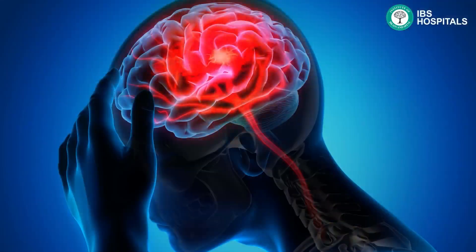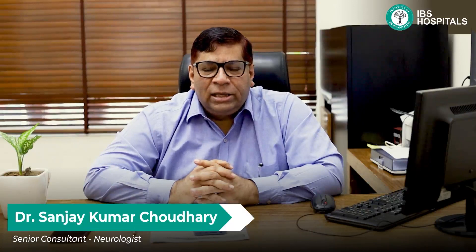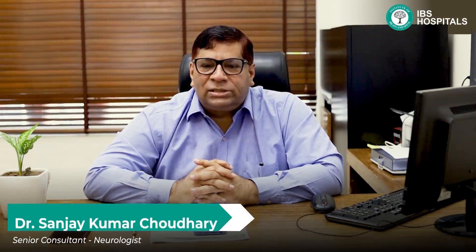The common symptoms of migraine include headache, which is usually one-sided but can be both-sided, and is usually a throbbing type of headache. With the headache there is usually a sensation of puking — we call it nausea — and sometimes there can be vomiting as well.